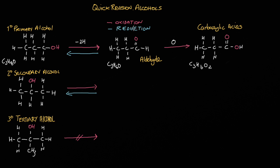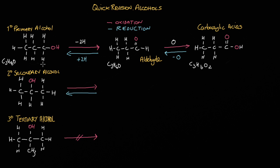In blue I've got the word reduction with arrows pointing to the left. We can reduce a carboxylic acid to give an aldehyde, by removing oxygen. And we can also reduce an aldehyde by adding hydrogen to give a primary alcohol. So moving left to right is oxidation, while moving right to left is reduction.